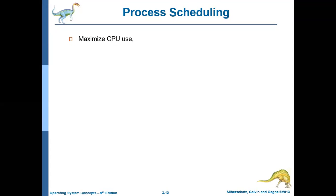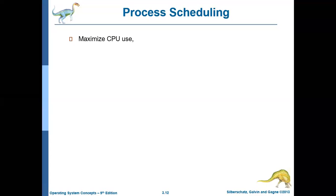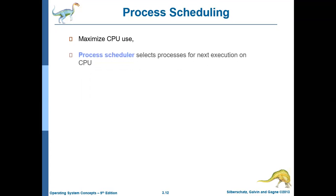Welcome. The topic we will be discussing in today's session is Process Scheduling. Why should we schedule processes? The operating system schedules processes to ensure maximum CPU utilization, because the CPU is the most important resource in a computer and it should be used in an effective way. And to ensure that, process scheduling is done.